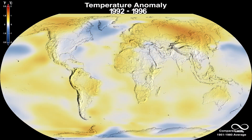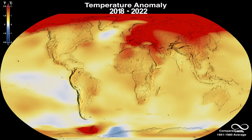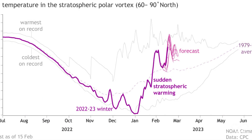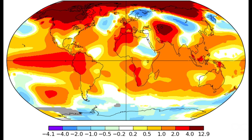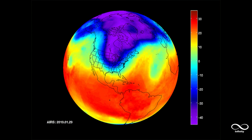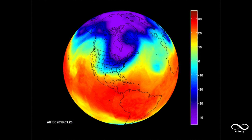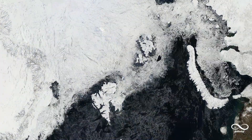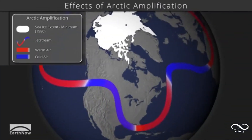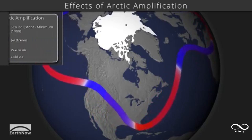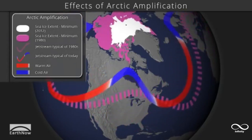Climate change can have a significant impact on polar vortices and their effects on the global climate. As global temperatures rise, the balance of temperature difference between polar and equatorial regions may shift. Polar vortices strengthen during winter due to the large temperature difference between the poles and the equator. However, global warming is heating up the Arctic at a faster rate than the rest of the planet — a phenomenon known as arctic amplification. This reduction in temperature difference can weaken the polar vortex, making it more prone to disturbances.